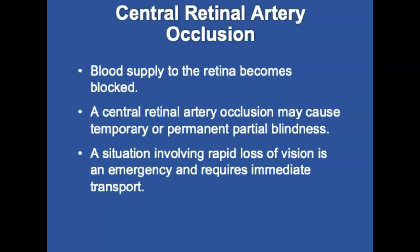Central retinal artery occlusion is a condition where blood supply to the retina becomes blocked by a clot or embolus in the central retinal artery or one of its branches. Possible causes include an embolus from the carotid artery, heart disease, drug abuse, fat emboli, arterial spasm, or oral contraceptive use. It may cause partial blindness, which may be temporary or permanent. Patients usually seek help due to sudden painless loss of vision, and vision loss in central retinal vein occlusion may progress over 30 to 120 minutes. Immediate transport is warranted.